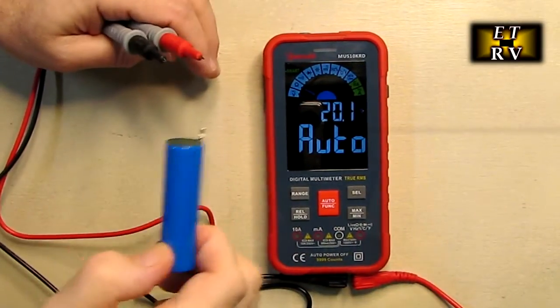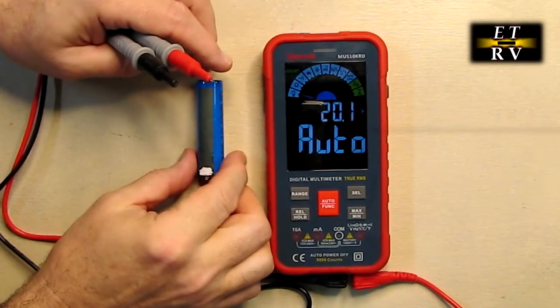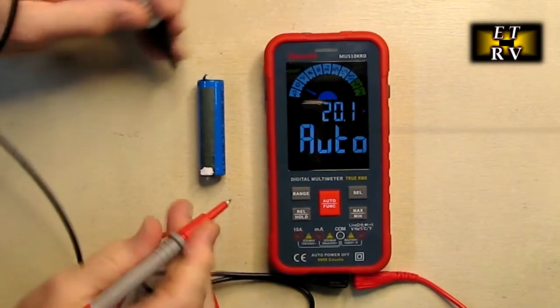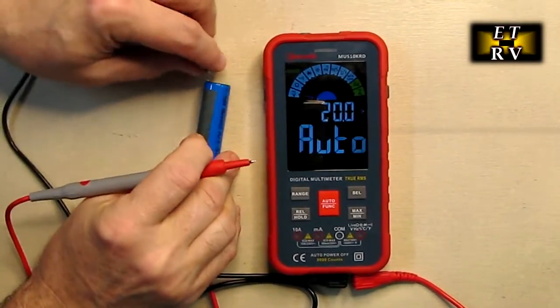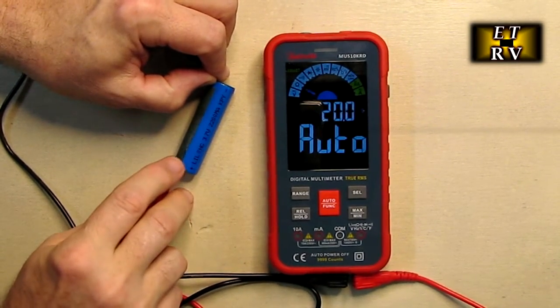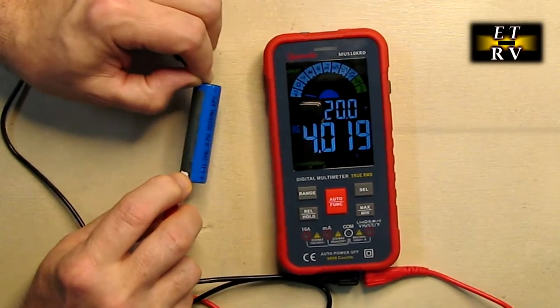Here's an 18650 lithium-ion battery. And let's go in the auto state. Let's see if it's going to show us the voltage on here. I'm going to touch one end on the negative, the other end on the positive. And you can see it says 4.019.